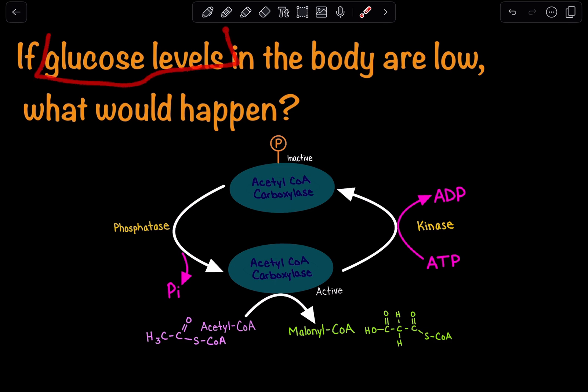When glucose levels are low, we need to understand that in our body, glucose is the first source of energy, lipids are the second source, and proteins are the final source.